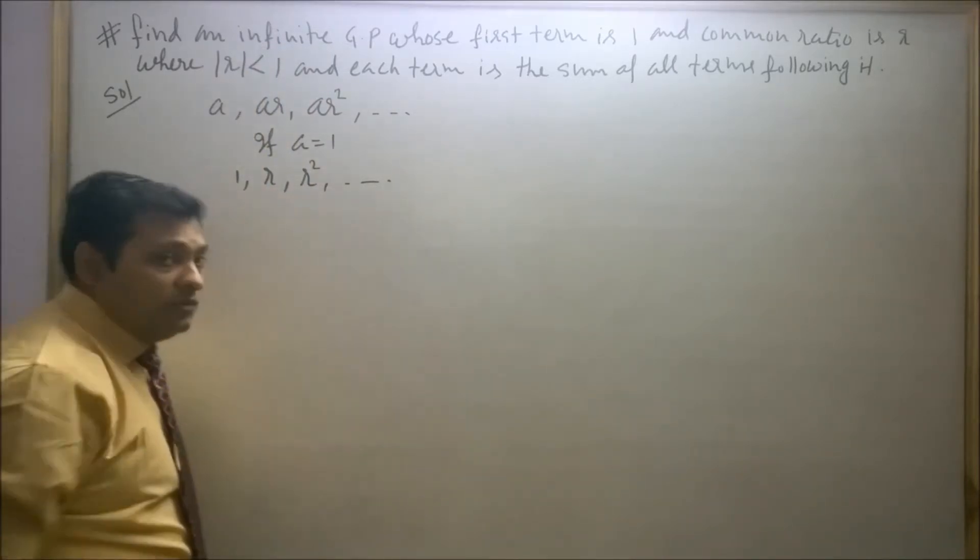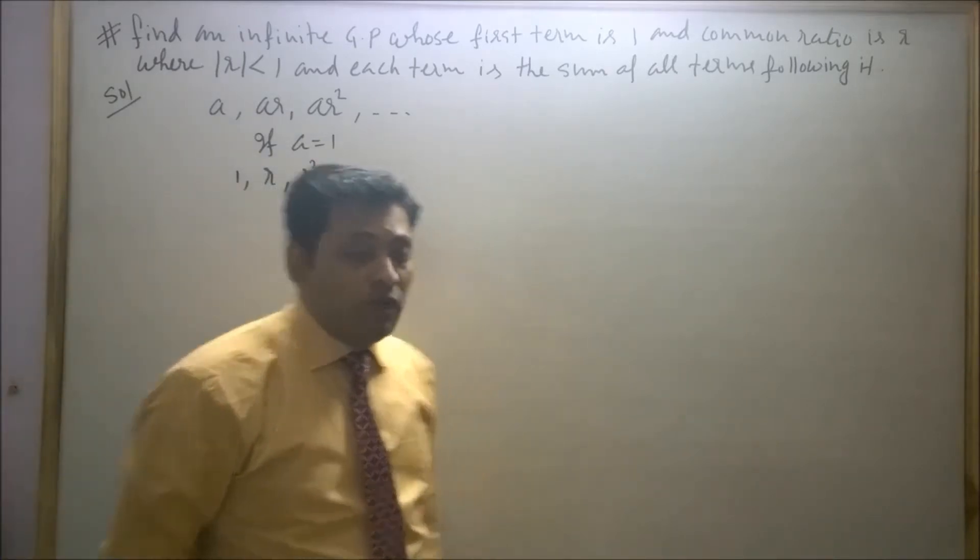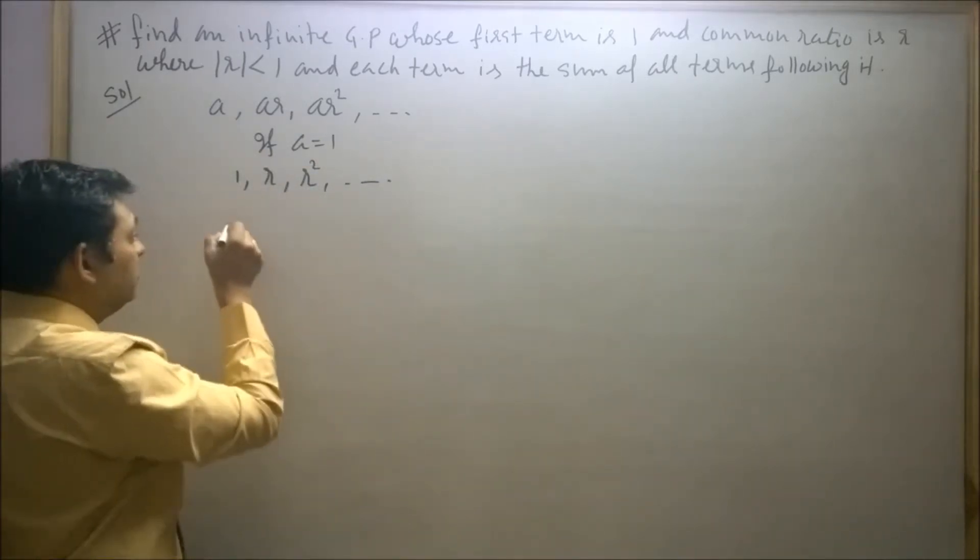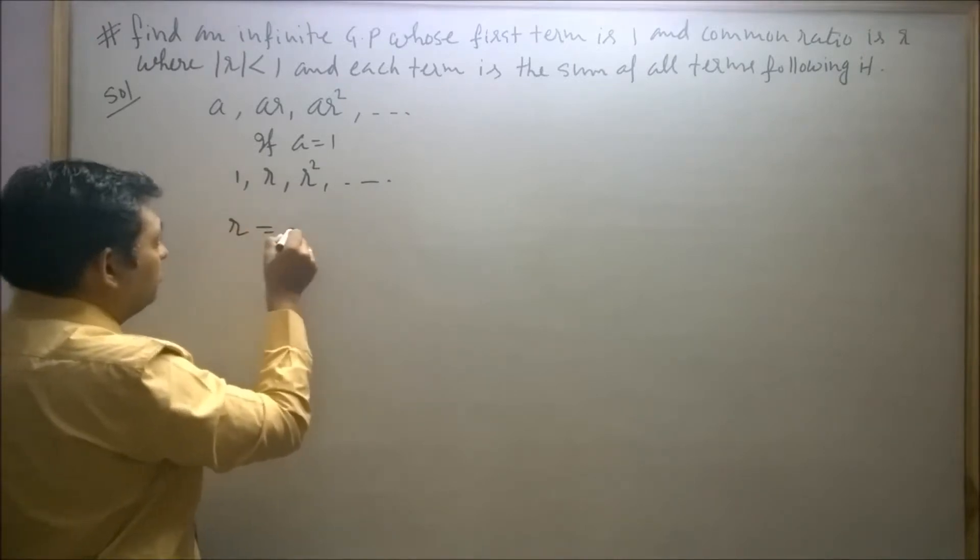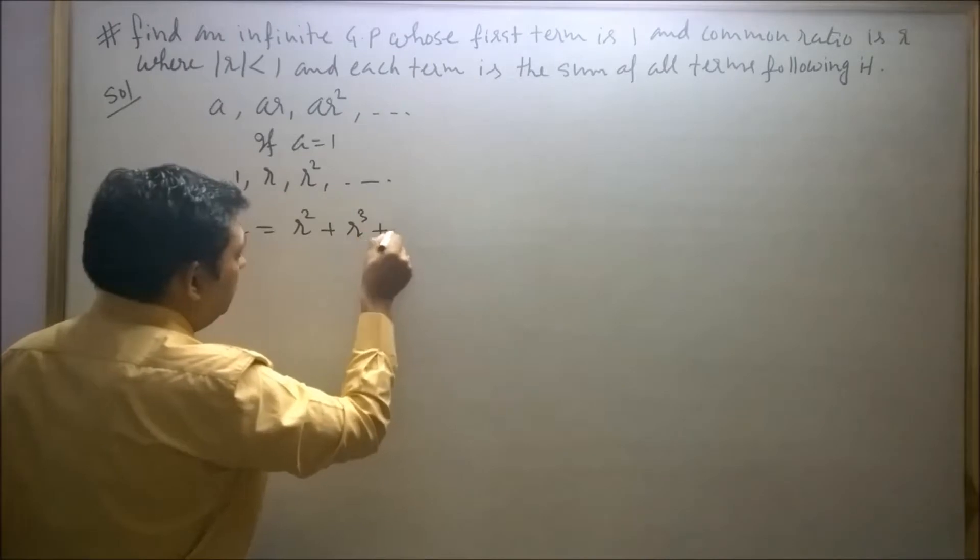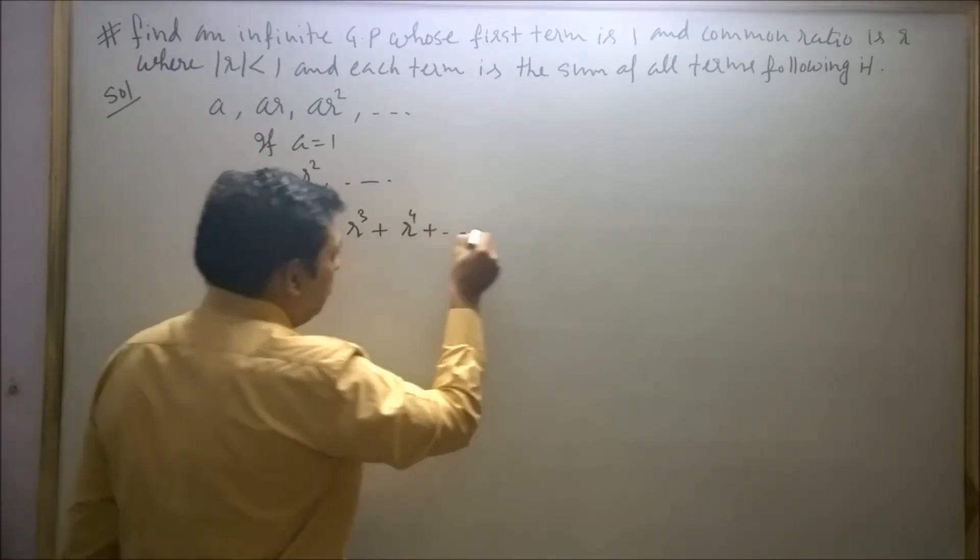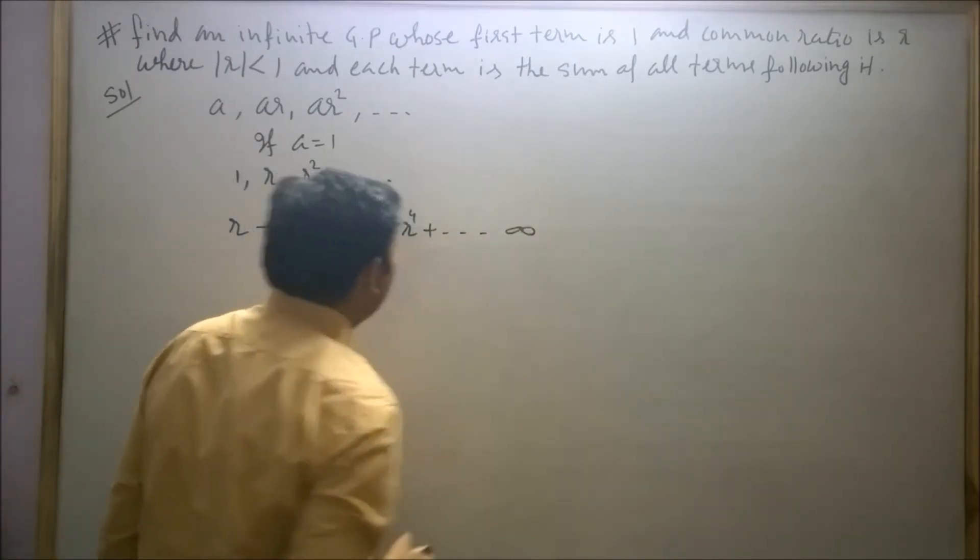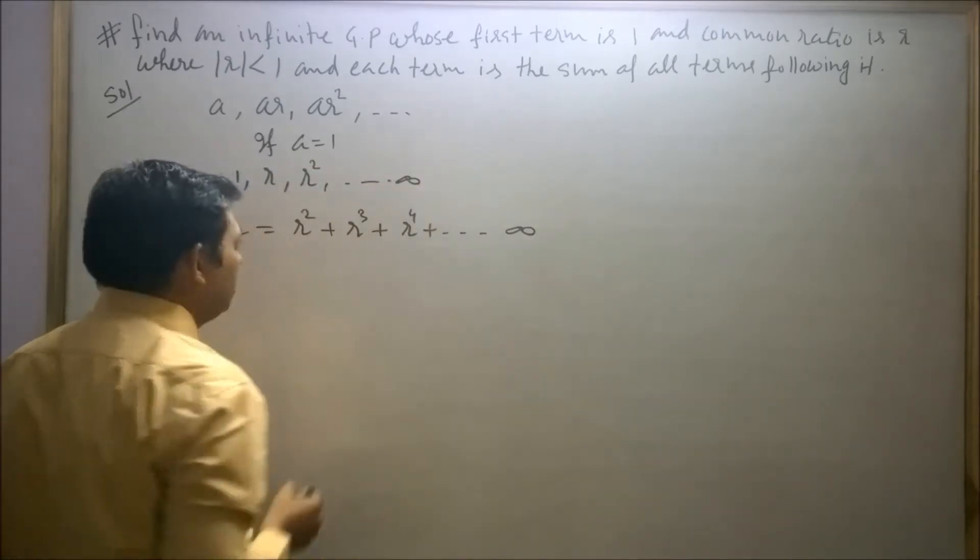It means R is equal to R square plus R cube plus R to the power 4 plus dot dot to infinity.